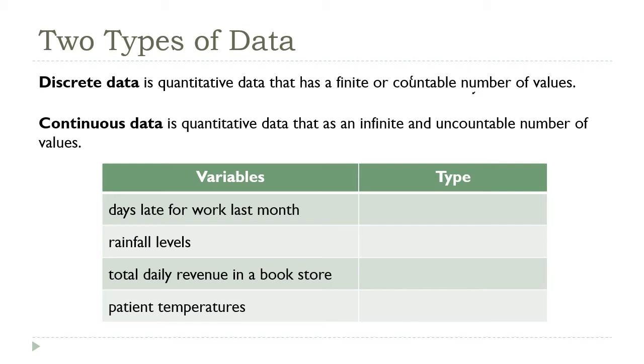So, the number of days someone is late for work, those are going to be integers. One, two, three, and so on, right? Integers put this into the discrete category.